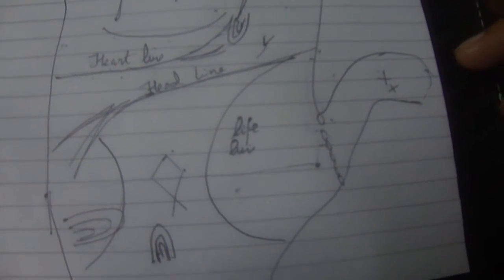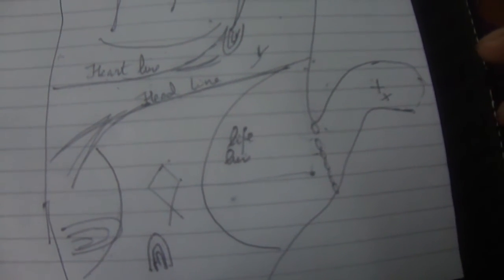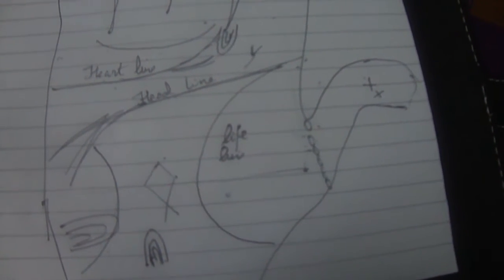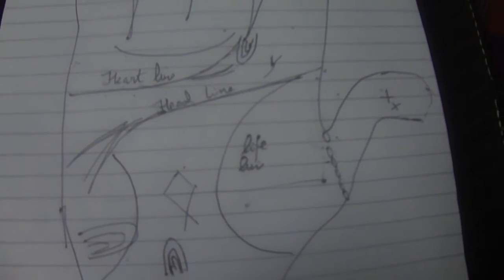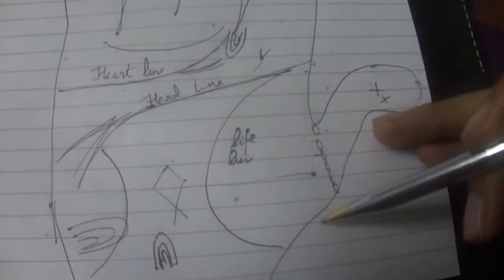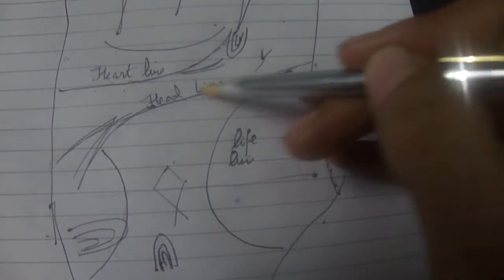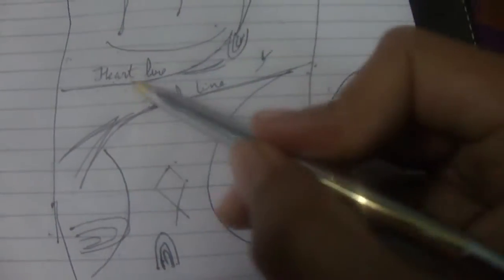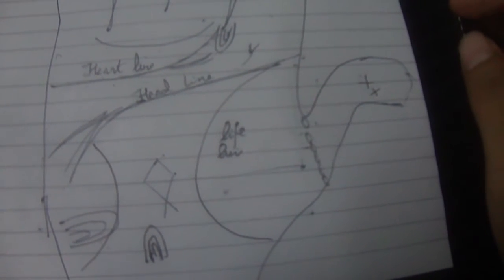Another interesting point, which can be slightly confusing, is when the structure of the hand contradicts the formation of the line. For example, we can have a square palm and a headline which is bending down. A square palm generally indicates that the person is more methodical and practical.